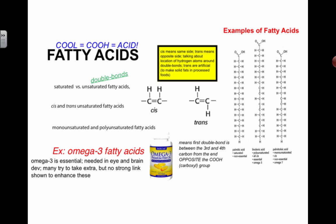Now let's take a look at fatty acids and how they might affect our health, but let's do a quick 15-second review. There are different types of fatty acids — they can have no double bonds, one double bond, or multiple double bonds. The double bonds can have the H's on the same side, or on opposite sides. This yellow box will explain that if you want to pause and take a look.